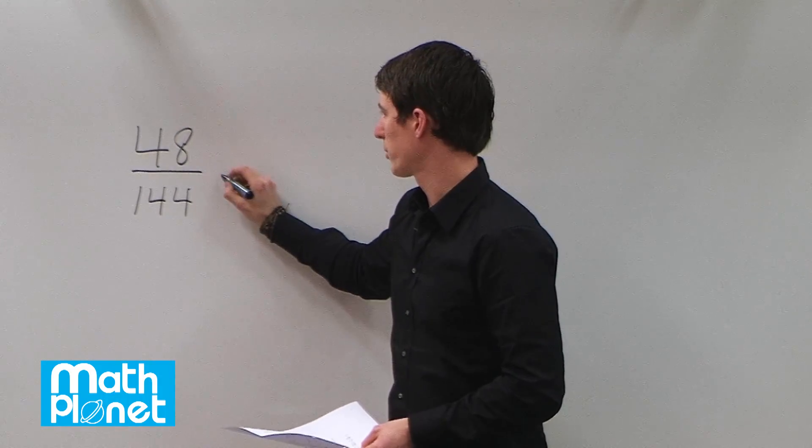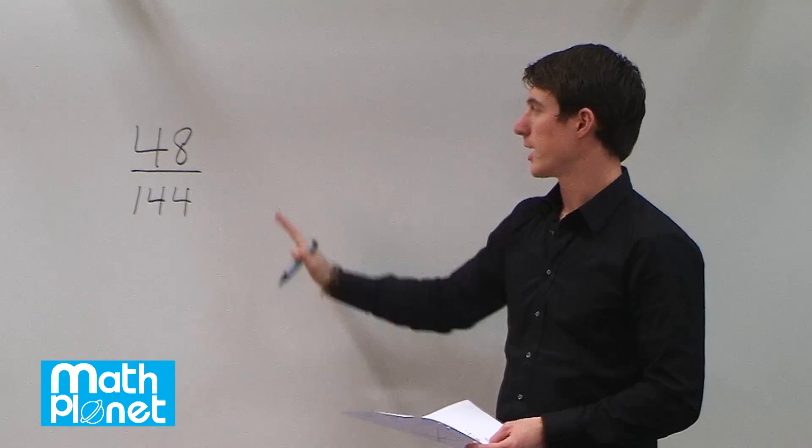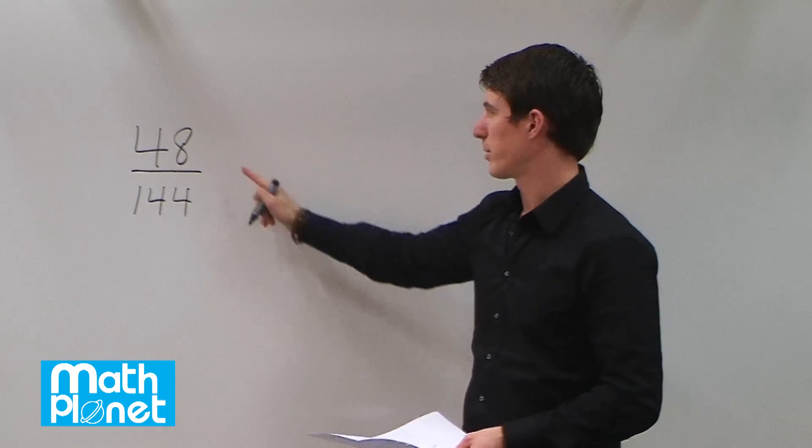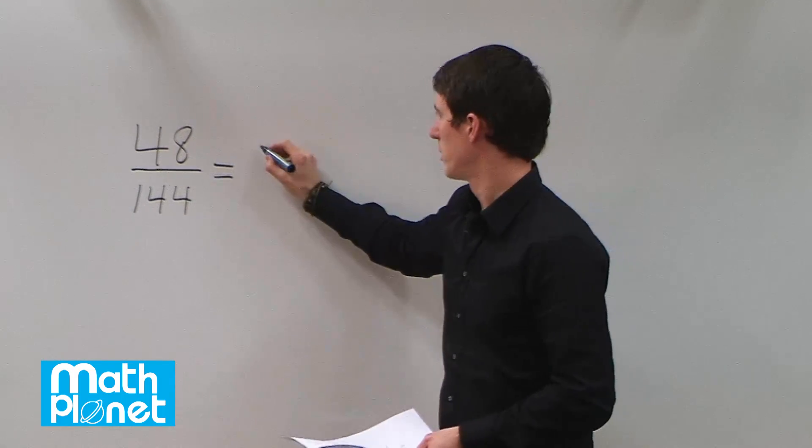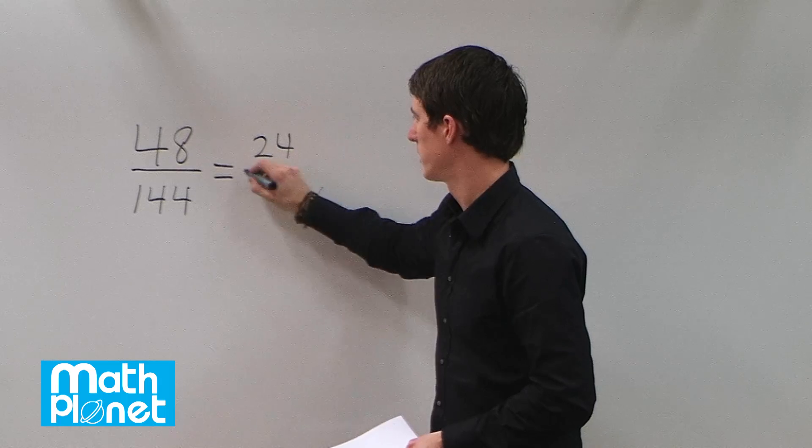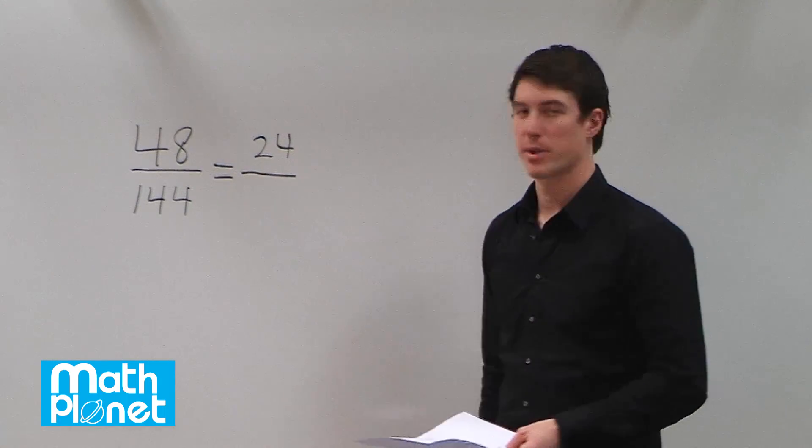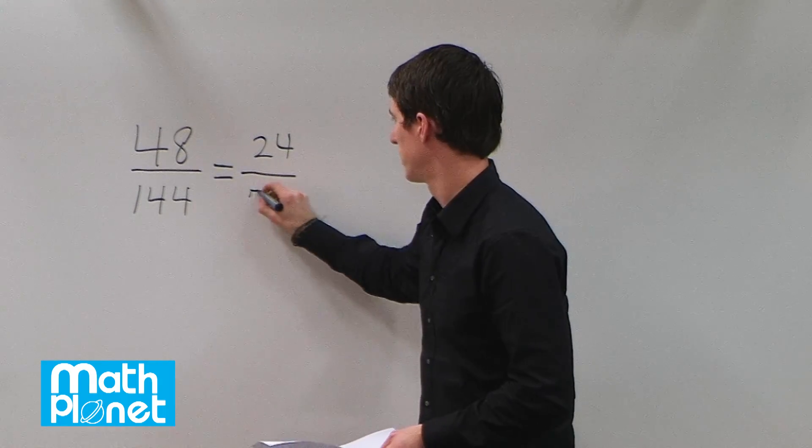If we divide both sides by 2, both the numerator and the denominator, it's the same fraction, but it'll be written in a slightly different way. If we divide the numerator by 2, we get 24. And if we divide the denominator by 2, we get 72.